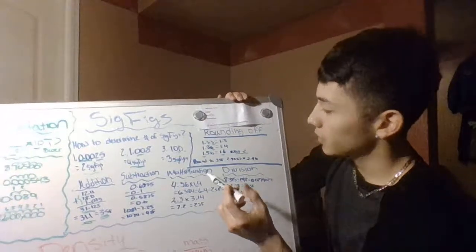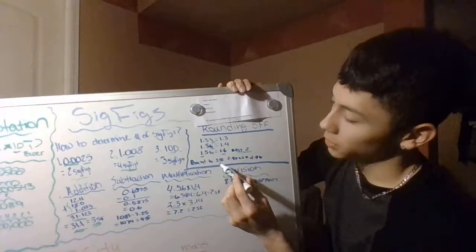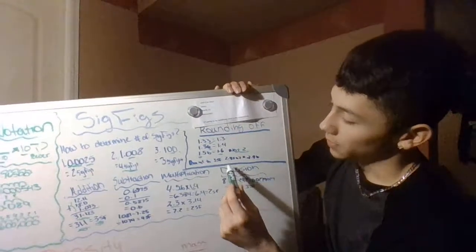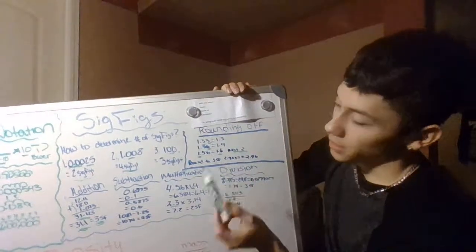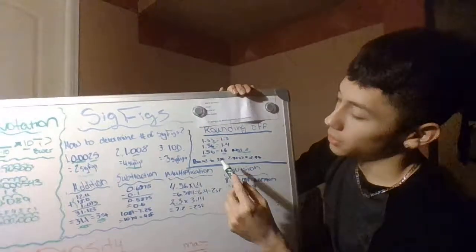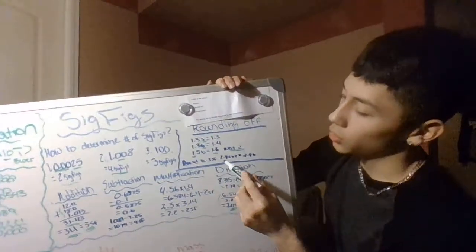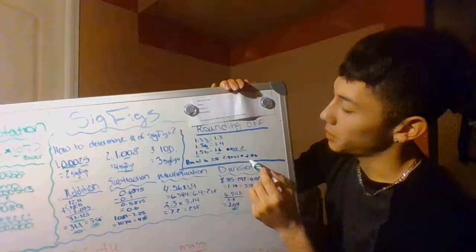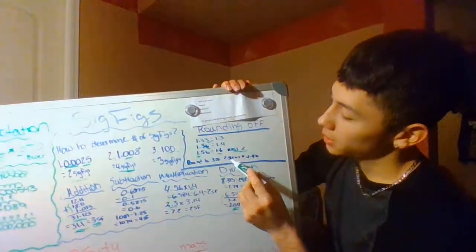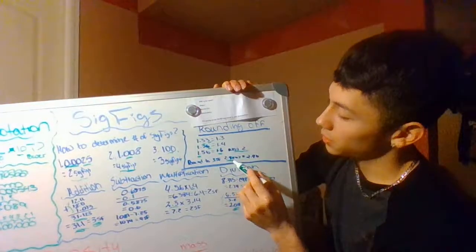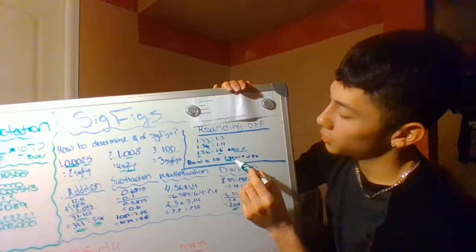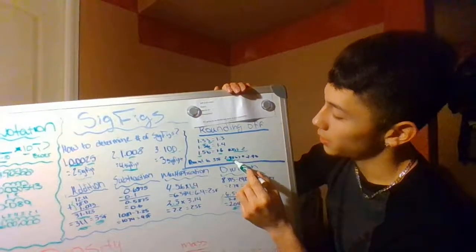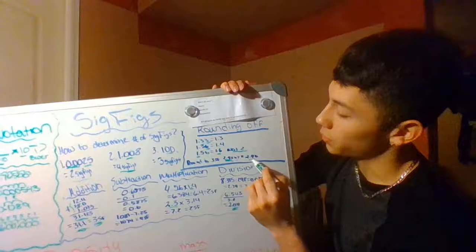Here's a problem: round 2.4567 to three sig figs. The first three sig figs are 2.45, and since the next digit — 6 — is greater than five, you round the 5 up to give you 2.46. Those are the rules of rounding — pretty simple.